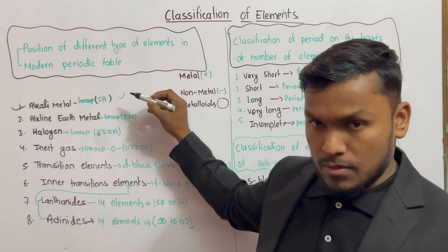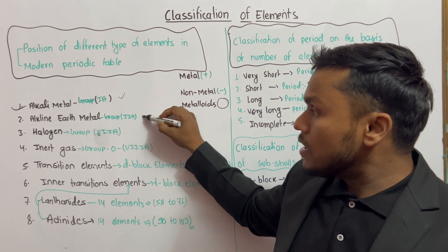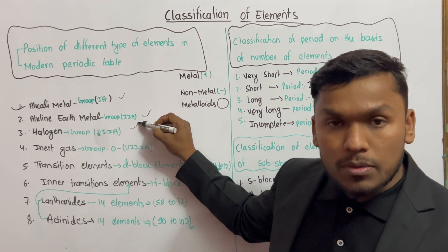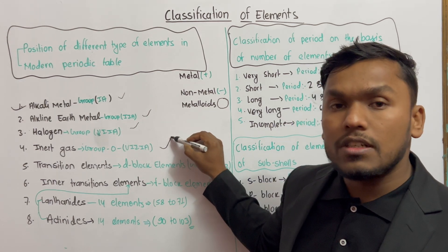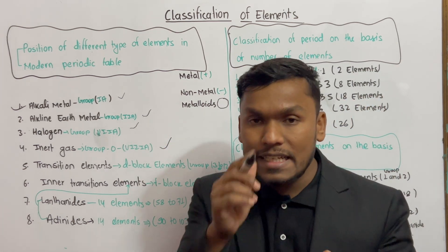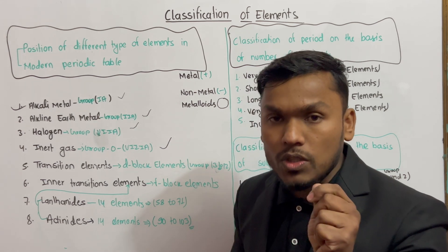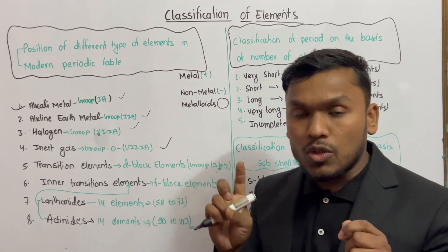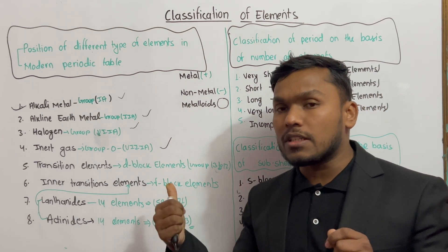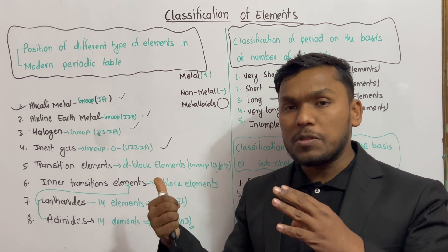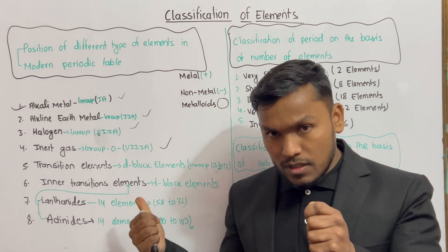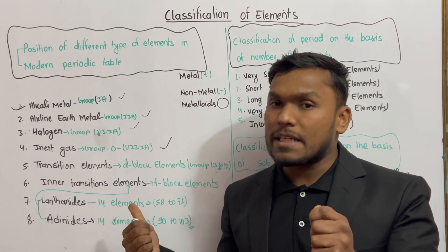Group 1A is alkaline metal. We will also write: Group 2A is alkaline earth metal. Then Group 7A is halogens. Group 8A is inert gas. Transitional element is the transitional element — the same as D-block element.